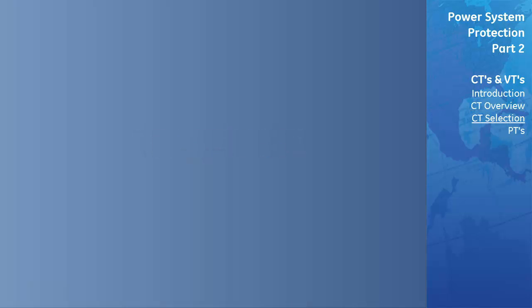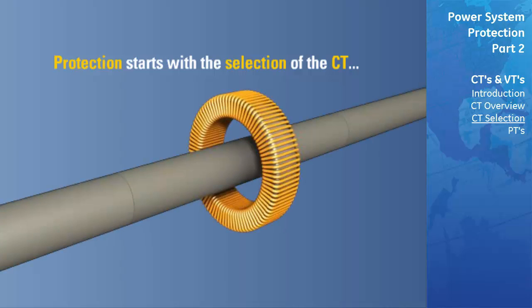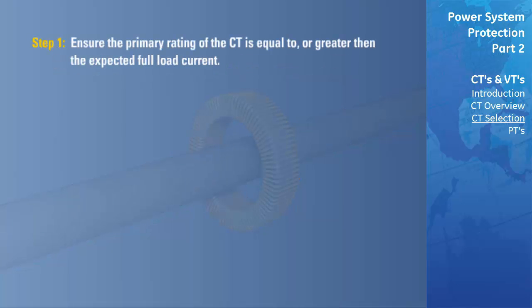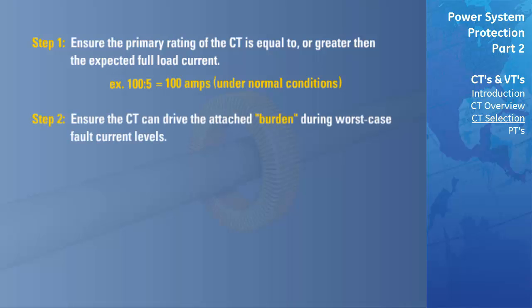Proper protection starts with the selection of current transformers. The following is a simple procedure that can be used to check whether or not there is the possibility of CT saturation. The first step is to ensure that the primary rating of the current transformers is equal to or greater than the expected full load current. We can determine the primary rating of a CT by looking at its ratio — for a ratio of 100 to 5, a CT has a primary rating of 100, meaning that no more than 100 amps should be passed through the CT under normal operating conditions. The second step is to ensure that the CT can drive the attached burden at the worst case fault current levels without saturating.